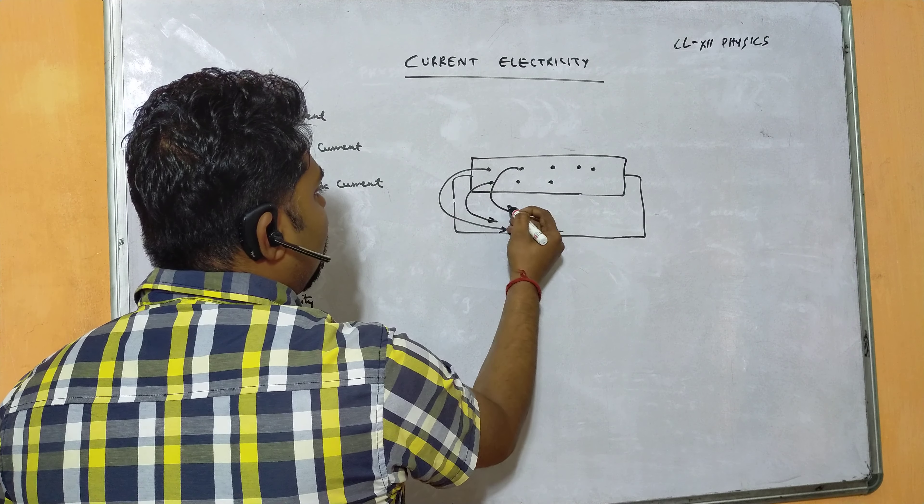Current is a scalar quantity because it does not obey the law of vector addition. The conventional direction of current is taken as opposite to the direction of flow of electrons. Conventional current is the flow of positive charge towards the negative terminal — opposite to electrons, since electrons flow from negative to positive. So conventional current flows from positive to negative.